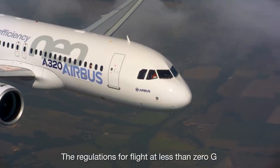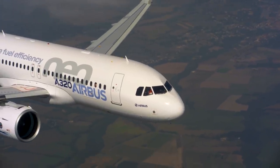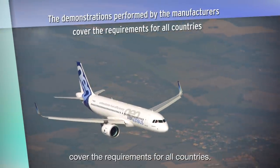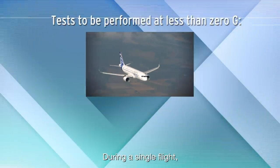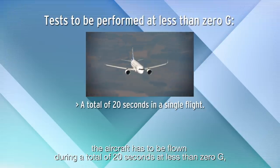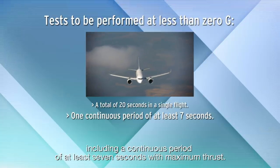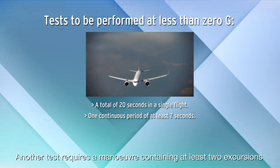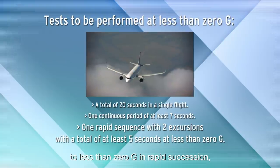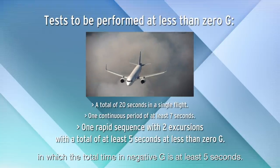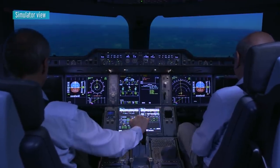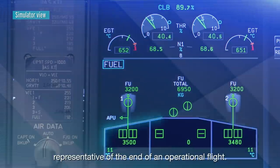The regulations for flight at less than zero G are slightly different in the United States and in Europe. The demonstrations performed by the manufacturers cover the requirements for all countries. During a single flight, the aircraft has to be flown during a total of 20 seconds at less than zero G, including a continuous period of at least seven seconds with maximum thrust. Another test requires a manoeuvre containing at least two excursions to less than zero G in rapid succession, in which the total time in negative G is at least five seconds. The tests are performed with a low amount of fuel, representative of the end of an operational flight.